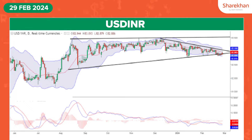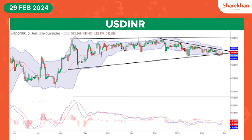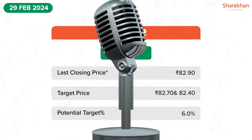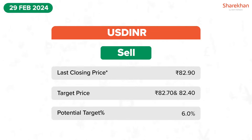The USDINR currency pair was moving in a sideways range and given a trendline breakdown, indicates the short-term trend is bearish. At present, USDINR bounced upward clearly but failed to breach the key trendline resistance at 83.37 level of the previous fall. Noticing that the price consolidates below the resistance, which supports the chances of resuming the expected bearish trend in the upcoming trading session.